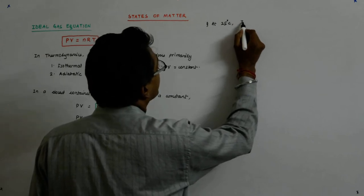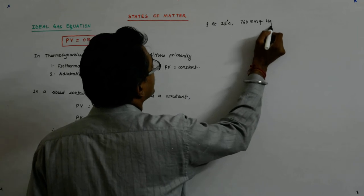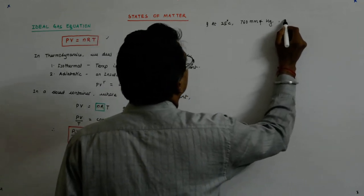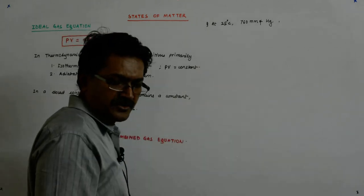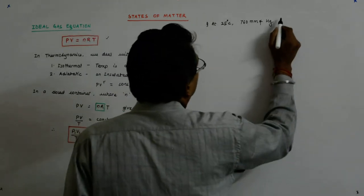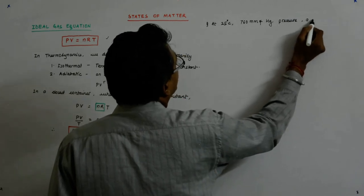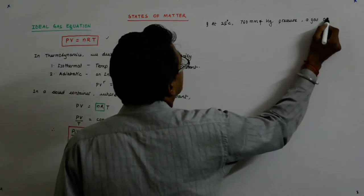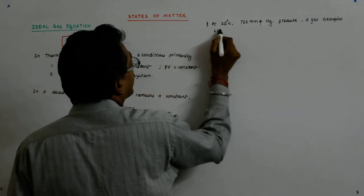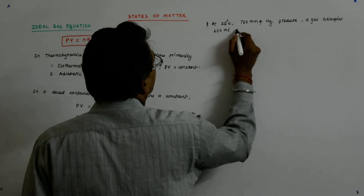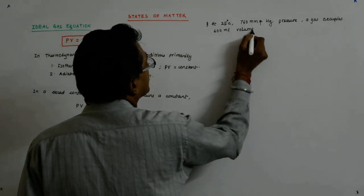I use 760 mm of Hg - this is pressure - a gas occupies 600 ml. This is volume only. What else?